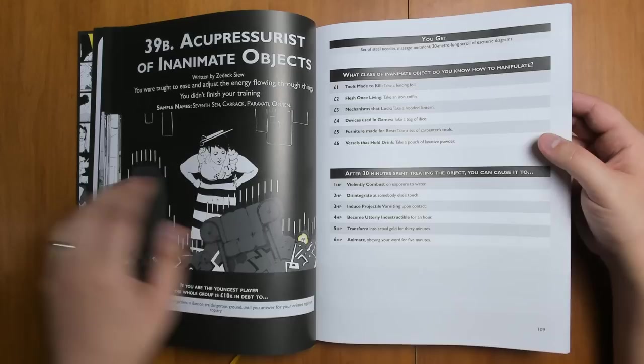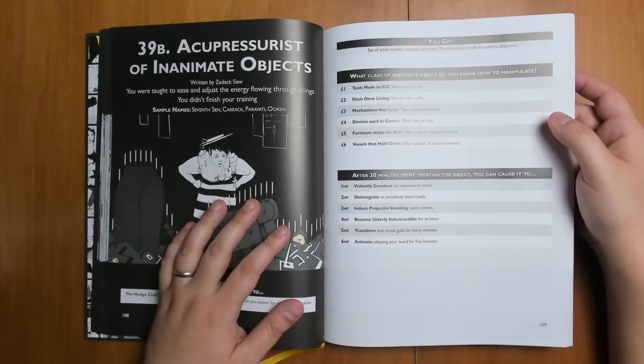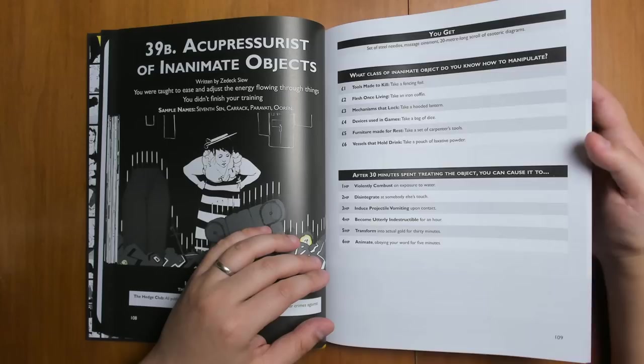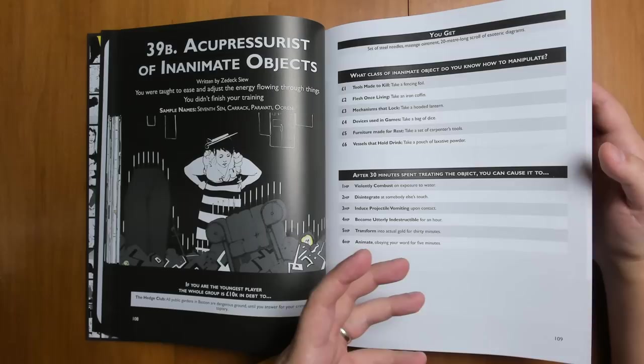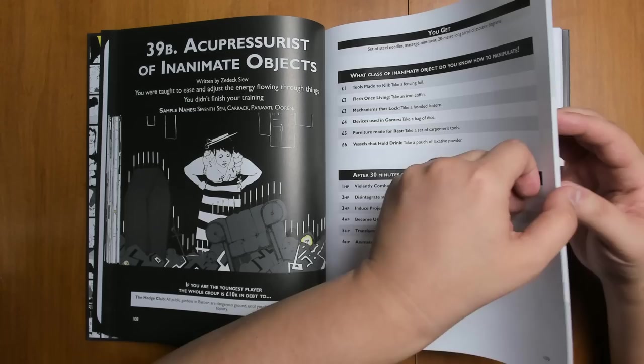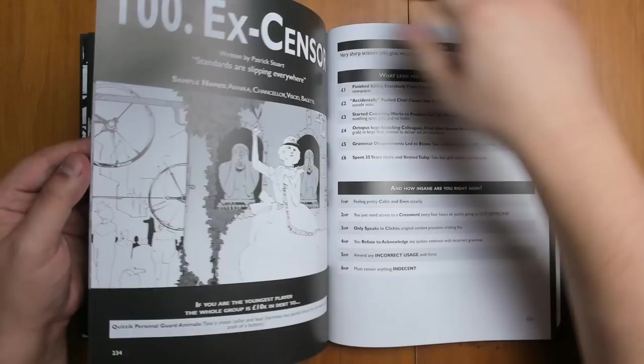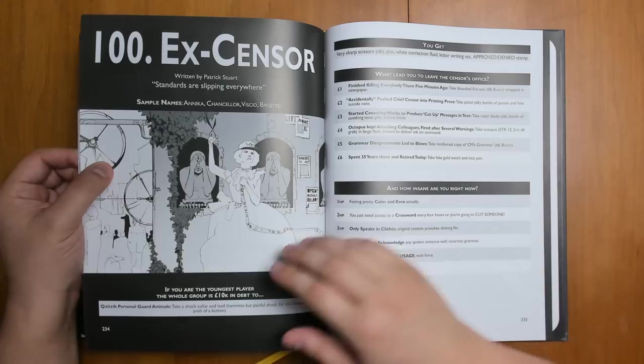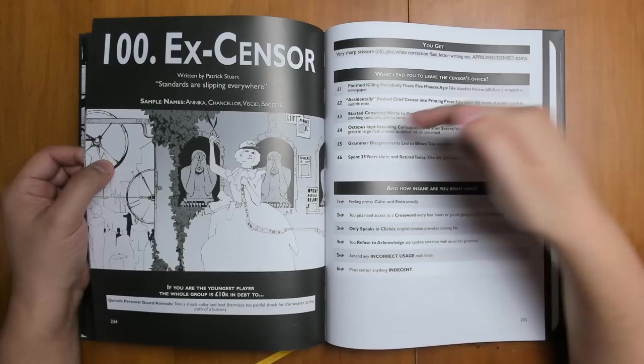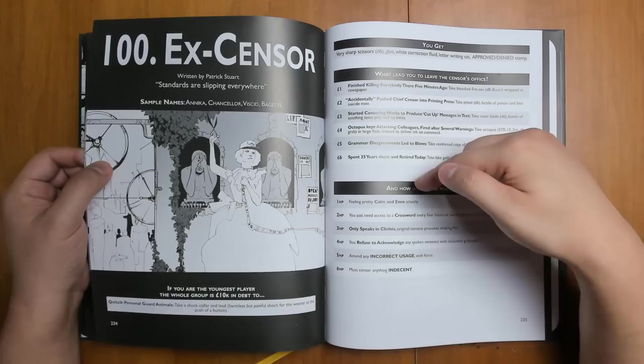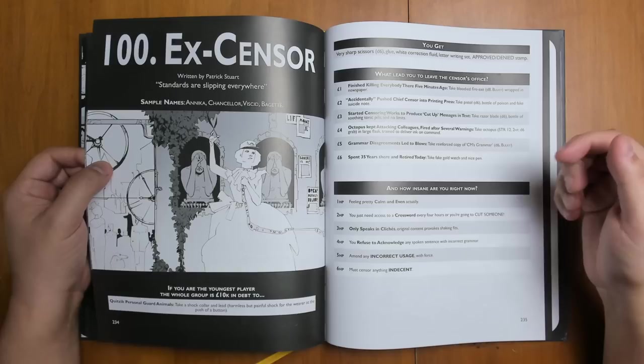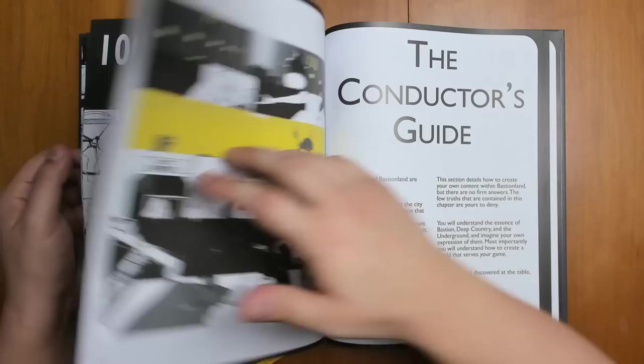And a lot of these are very strange, and they really give you the flavor and the texture of the city of Bastion. There's more information about this in the back of the book, but a lot of the flavor comes from reading through all of these characters and just imagining the city from the information that it gives you. Most of the super fancy failed careers at the back are all guest-written, and they get stranger and stranger. For example, we have The X-Sensor by Patrick Stewart. What led you to leave the censor's office? Perhaps your octopus kept attacking colleagues, and you were fired after several warnings. You get an octopus. Or how insane are you right now? Perhaps you amend any incorrect usage of grammar with force. So you end up with all sorts of oddball characters.